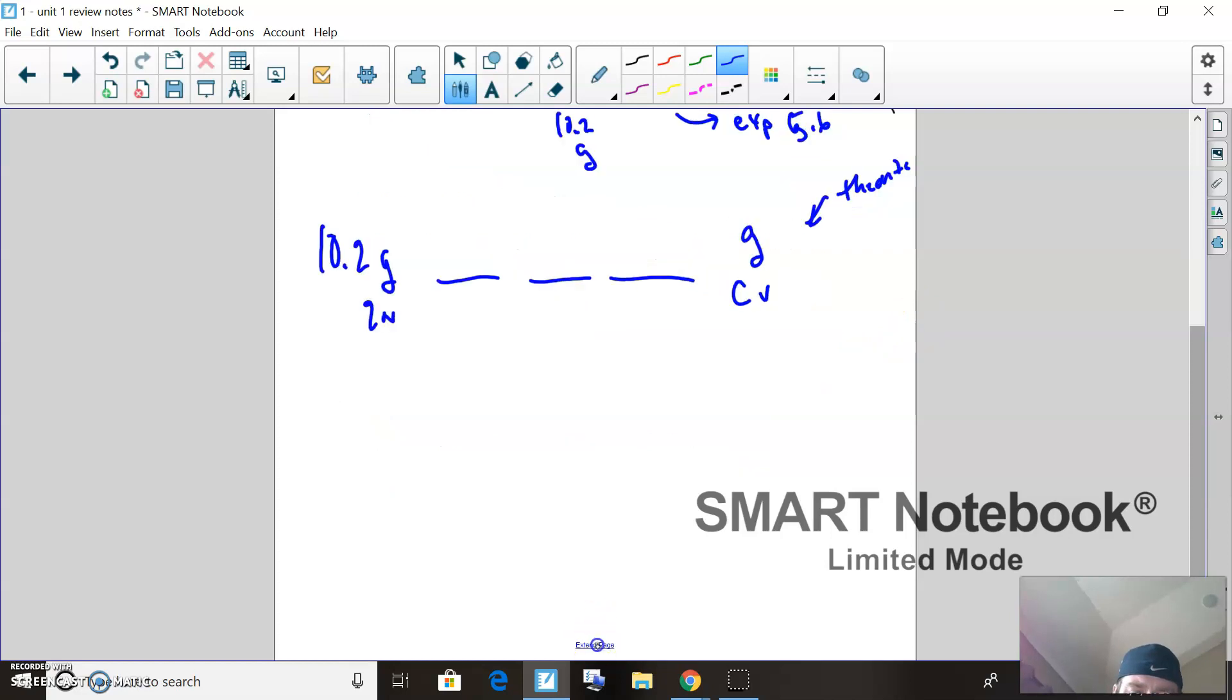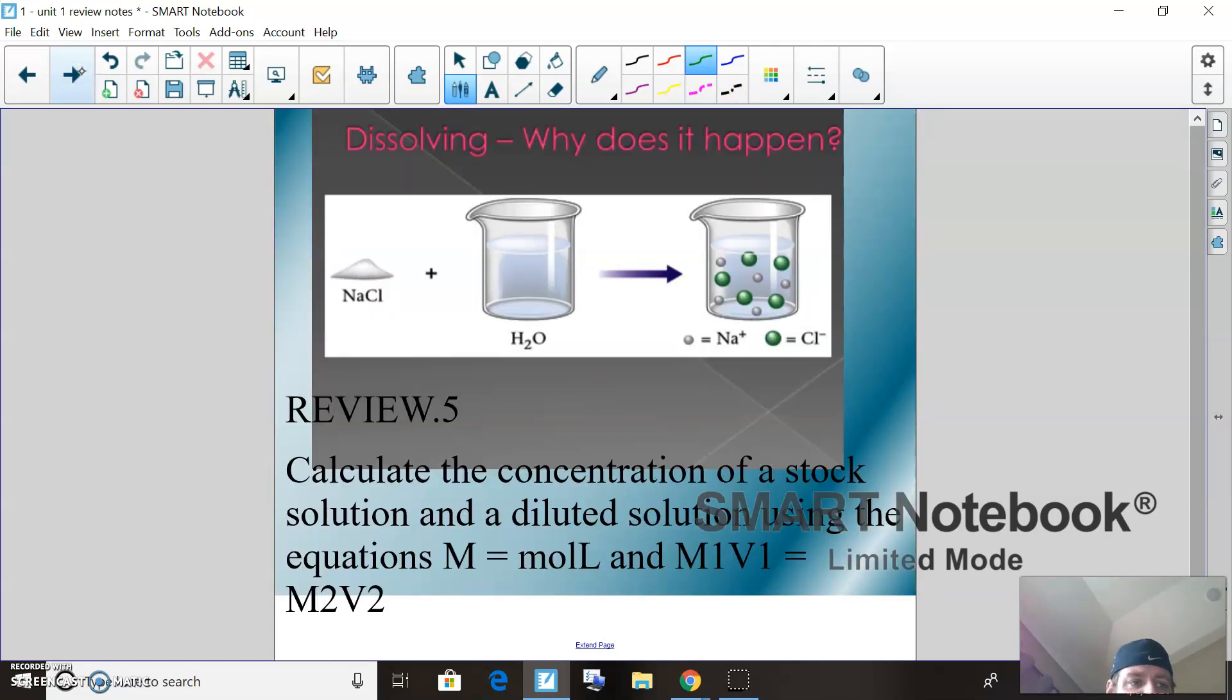So then what I can do to get my percent yield is take my 5.6 from my experiment, which you gave me—5.6 grams—over whatever this value is right here, your theoretical grams of copper from your stoich, times 100. Alright guys, that's it. That's the variations of stoichiometry.